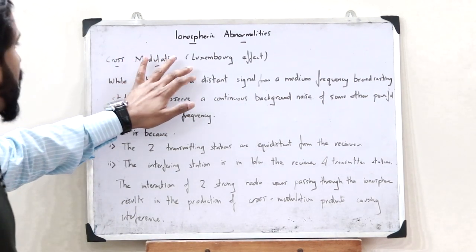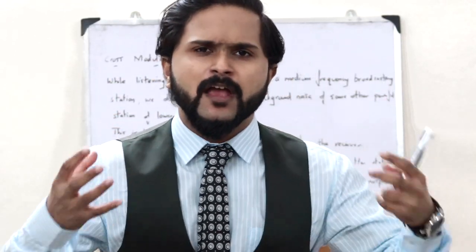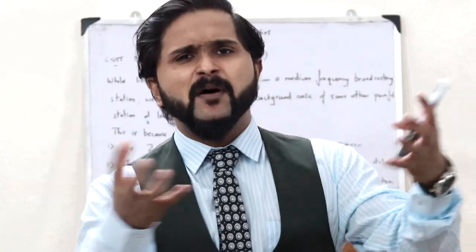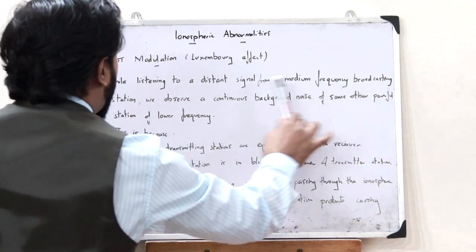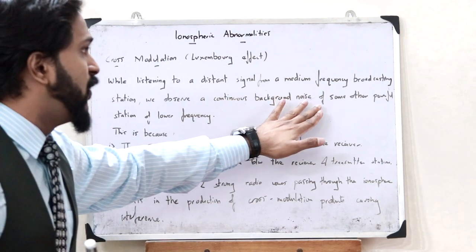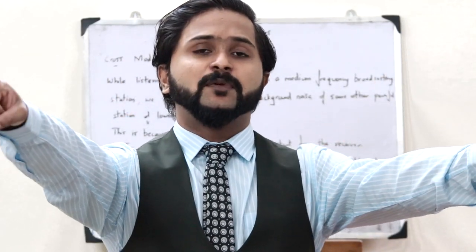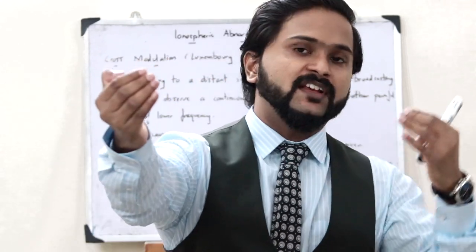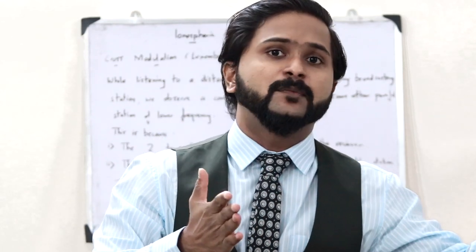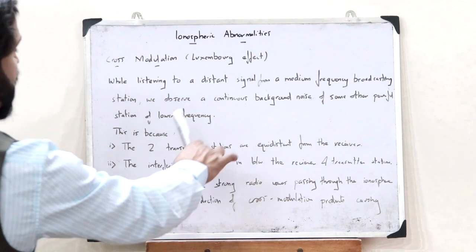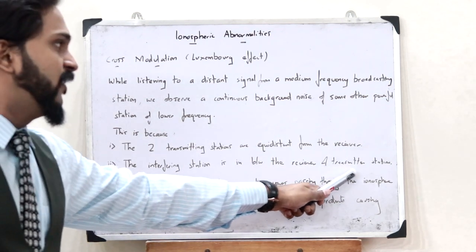Next, we have something referred to as cross modulation or the Luxembourg effect. While listening to a distant signal from a medium frequency broadcasting station, we can observe a continuous background noise from some other powerful station of lower frequency. This might happen due to two reasons: first, the receiver and both transmitters are equidistant from each other; and second, the interfering station is in between the receiver and the transmitter station.